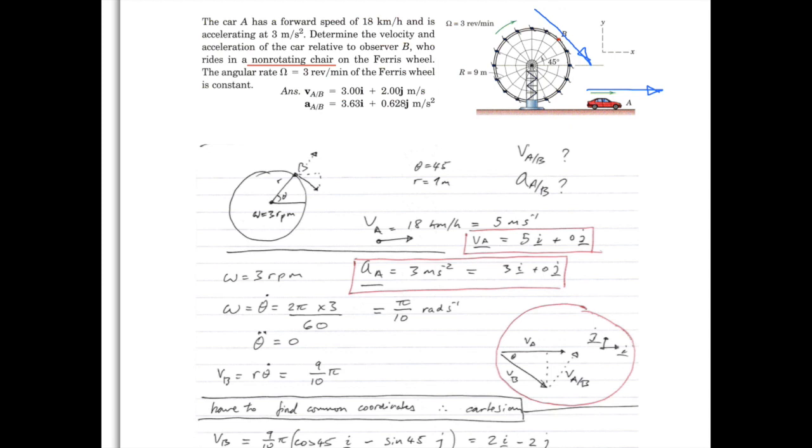So we've got the situation here where you're told that the car A has a forward speed of 18 kilometers an hour, and it's going to be important to put this into vectors, because we're going to solve this vector equation using vector notation, and of course translating relative motion is only vector addition, that's all it can be.